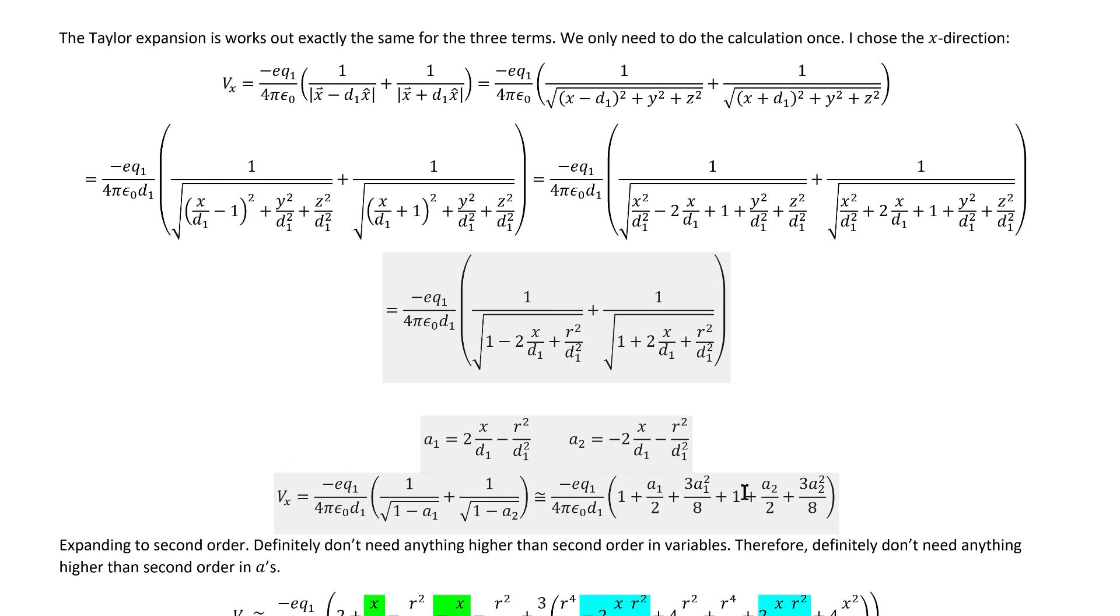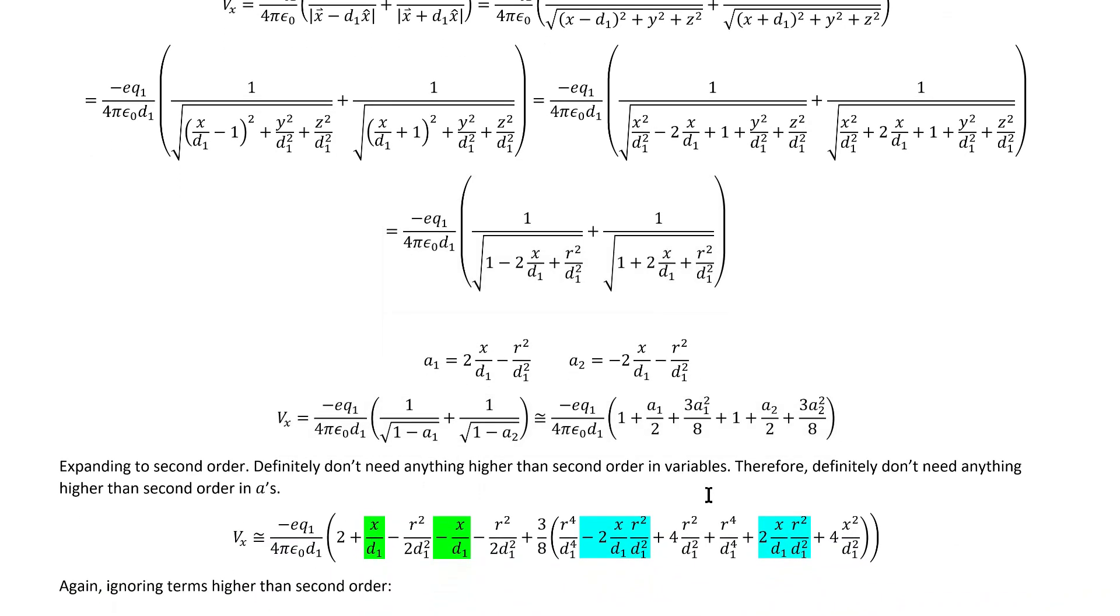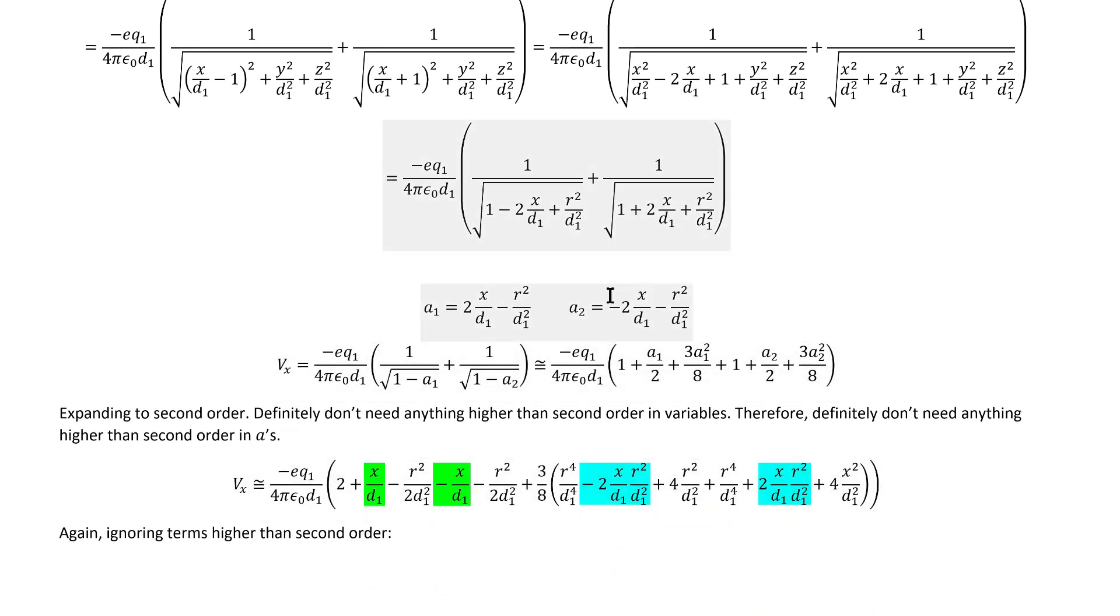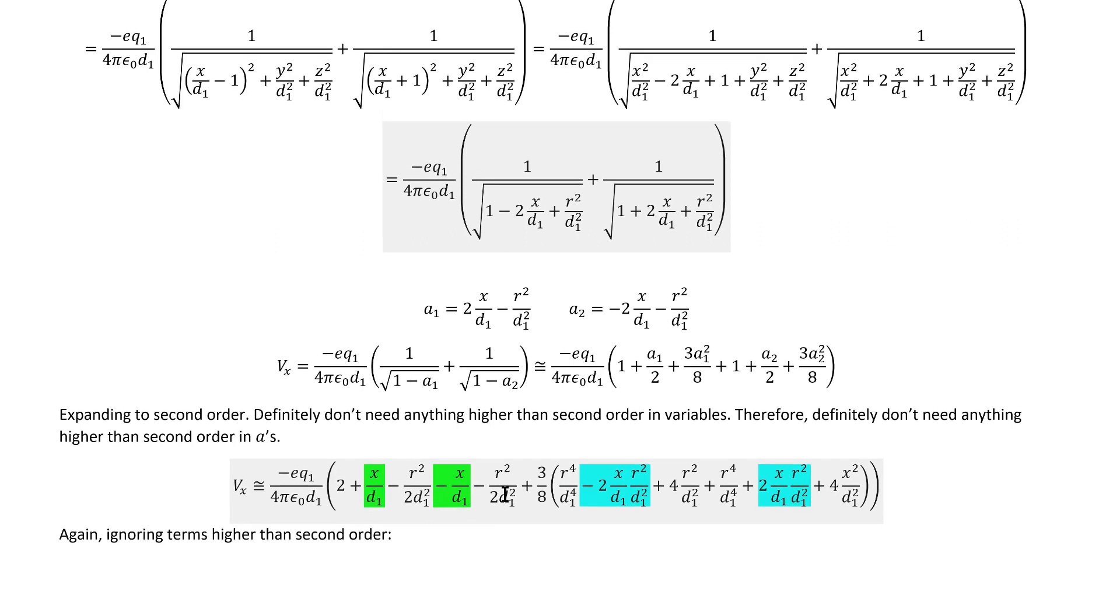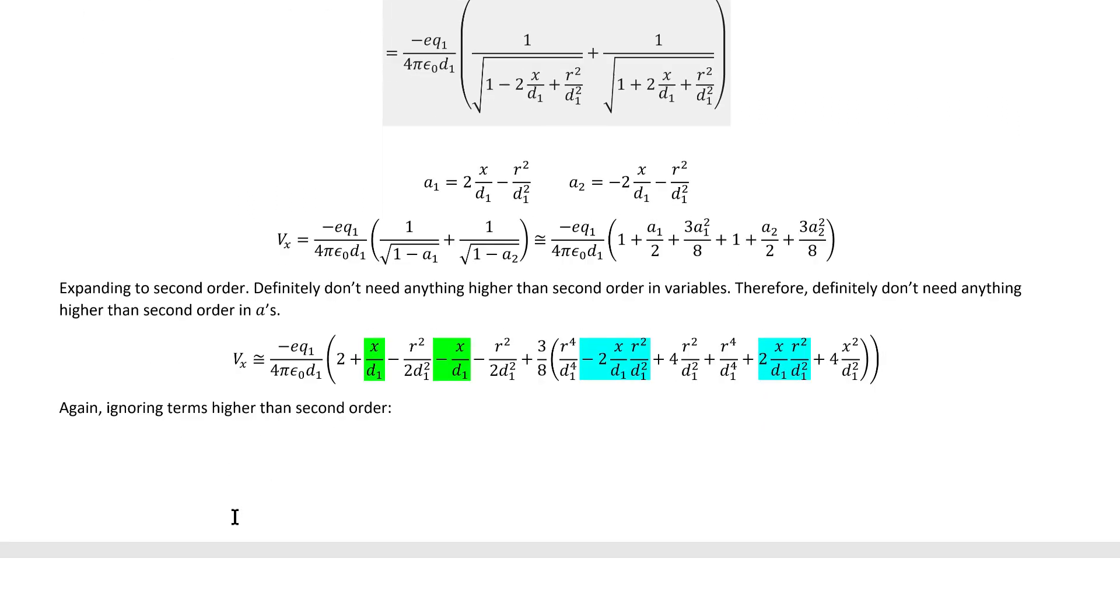Here, if we truncate it to second order, now technically we're supposed to be going to second order in the distance variables, so like R squared and X, and not really to second order in these A quantities. But if we truncate it in second order, we do know that we'll at least definitely get all of the second order terms in these distance variables, even though we'll also get some more, which we can just ignore later. If we then insert these quantities back in and expand it out and refactor, we arrive at this, and we do find some cancellations which simplify things down immediately.